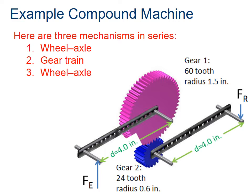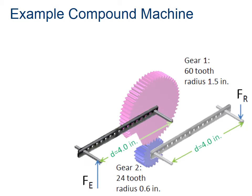So here, let's take a look at this example compound machine. Here we have a wheel and axle, a gear train, and another wheel and axle. The wheel and axle is simulated by the bar with the effort force that uses the gear and drives that pink gear. And then our output, or our resistance, is the bar that is driven by the blue gear.